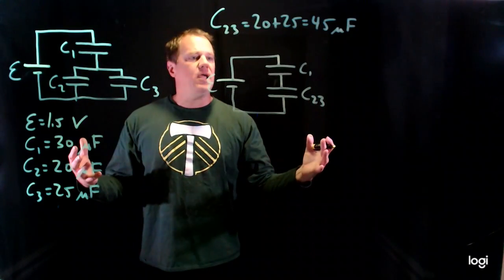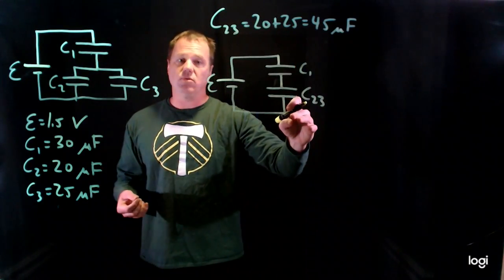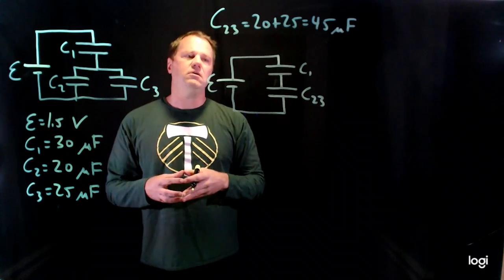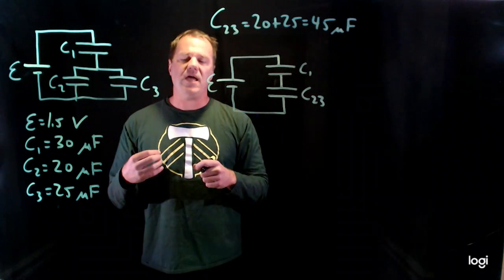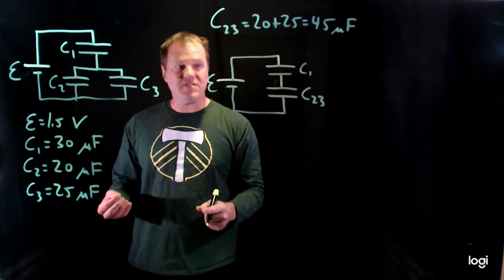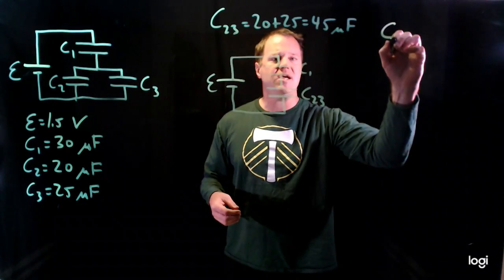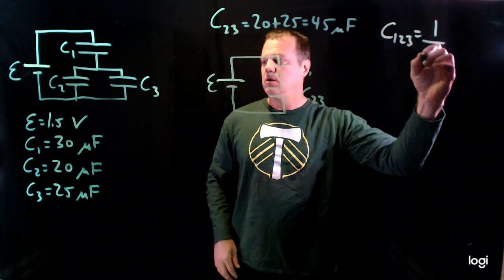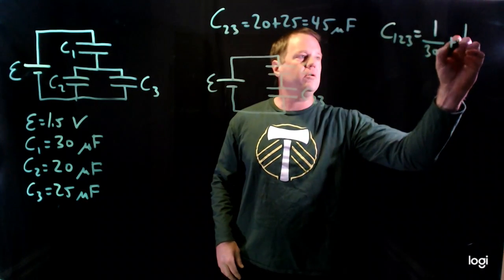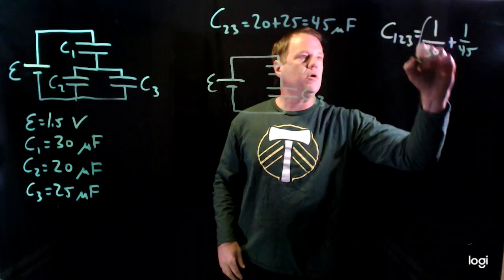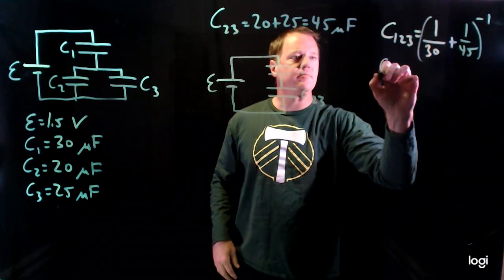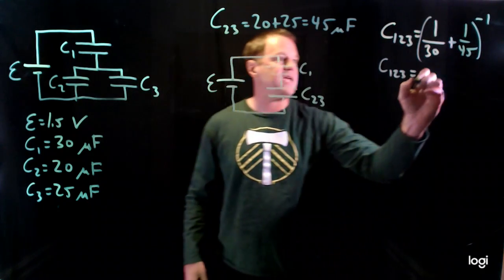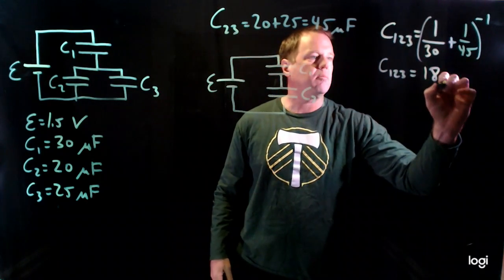So now I can apply the series rule for capacitor. They will behave as if they are a single capacitor with a capacitance that is the inverse of the sum of the inverses. So C123 will be one over 30 plus one over 45 raised to the minus one. So C123 will be equal to 18 microfarads.